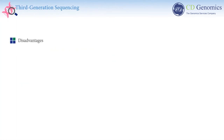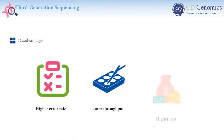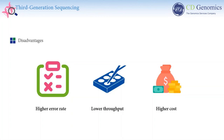Despite long-read sequencing technologies harboring many promising features, their broad application is still limited by a higher error rate, lower throughput, and higher cost than NGS technologies. The throughput and accuracy of these technologies need to be substantially improved before applying to studies involving complex genomes.